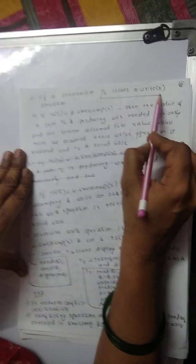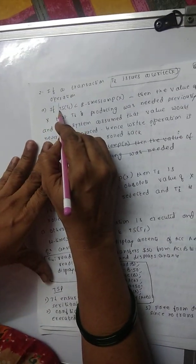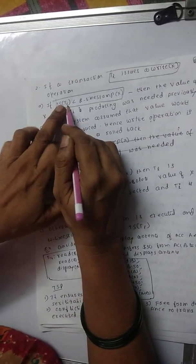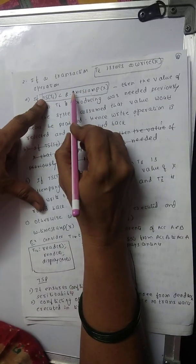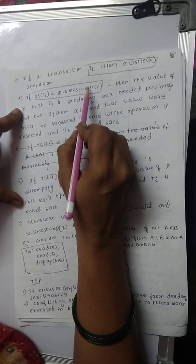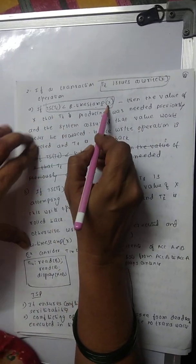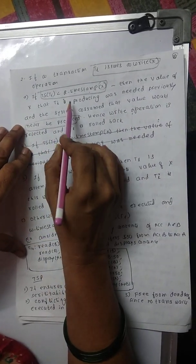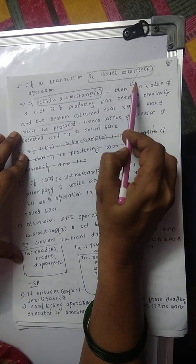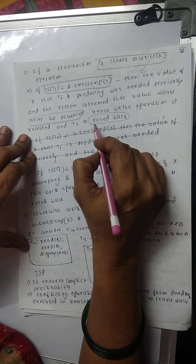Next, for the write operation rule: if a transaction Ti issues a Write(X) operation, we check three things. First, we check the timestamp value against the read timestamp value. If the condition fails — meaning Ti would produce a previous outdated value — the write operation is rejected and a rollback is performed.